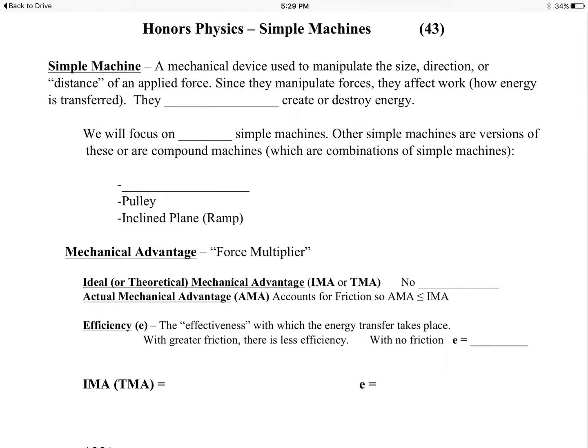A simple machine is a mechanical device used to manipulate forces, their size, their direction, and the distance they're applied. Since they manipulate forces and work is a force times a distance, they're connected to work and doing work, which is how energy gets transferred. What they do not do is they do not create or destroy energy because they cannot violate the law of conservation of energy.